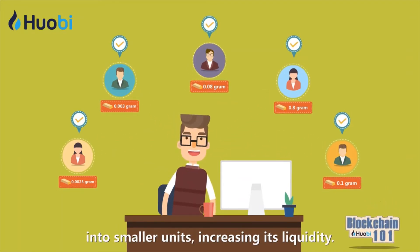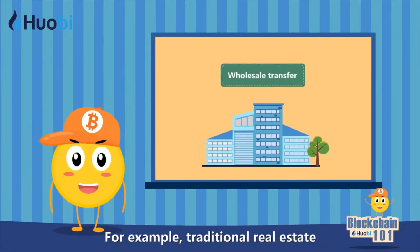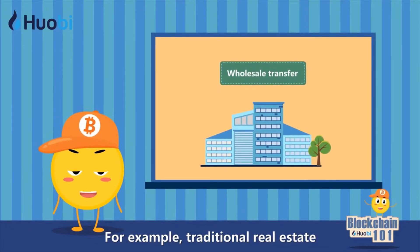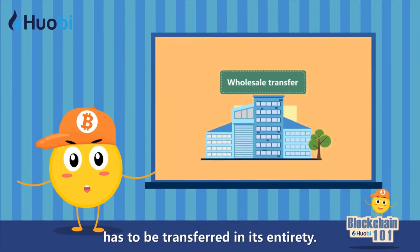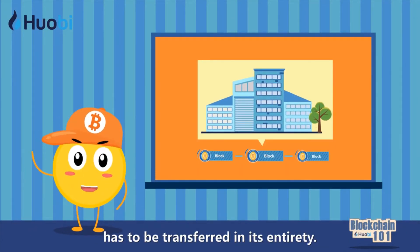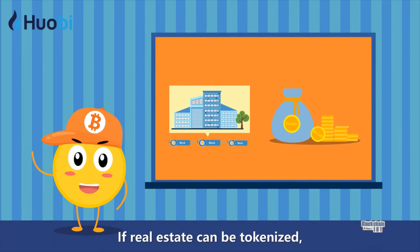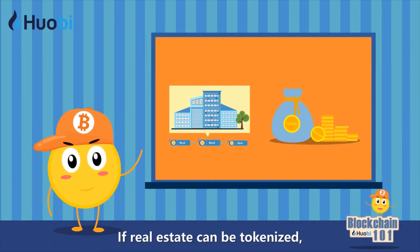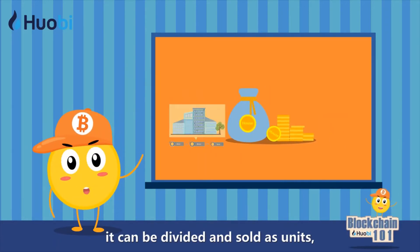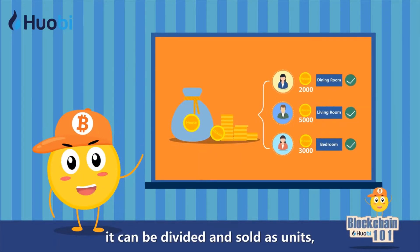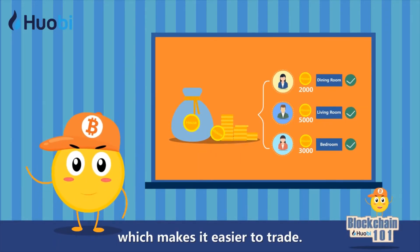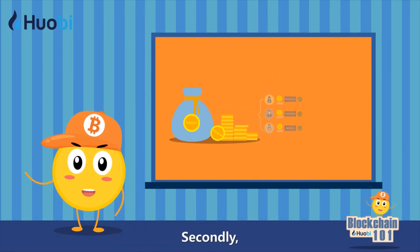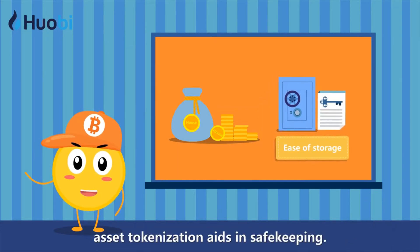For example, traditional real estate has to be transferred in its entirety. If real estate can be tokenized, it can be divided and sold as units, which makes it easier to trade. Secondly, asset tokenization aids in safekeeping.